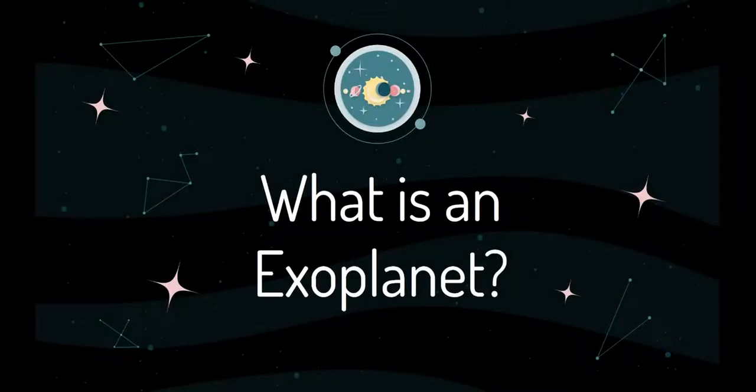An exoplanet is any planet outside of our solar system. Most orbit other stars, but free-floating exoplanets, called rogue planets, are untethered to any star.